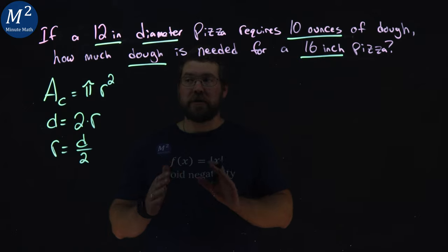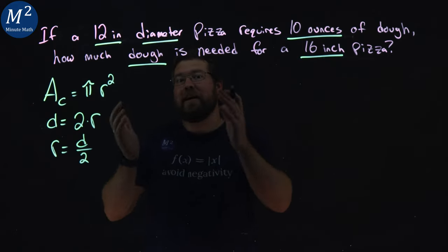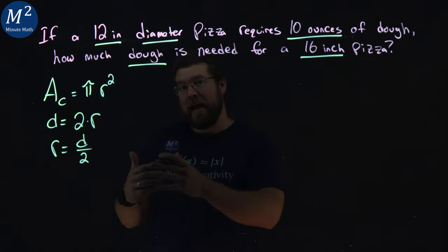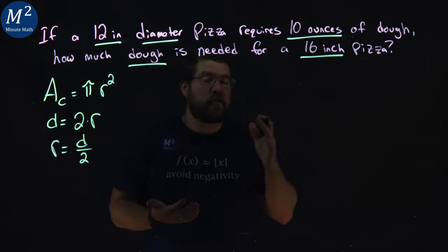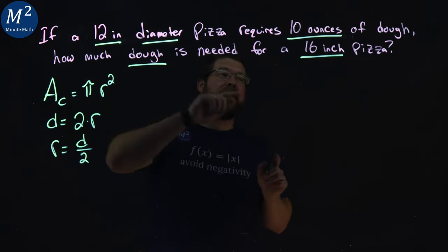Now, we want to set up a proportion, but we want to find the square inches of the pizza, the area. That's what relates to the dough, not the length of the diameter directly.